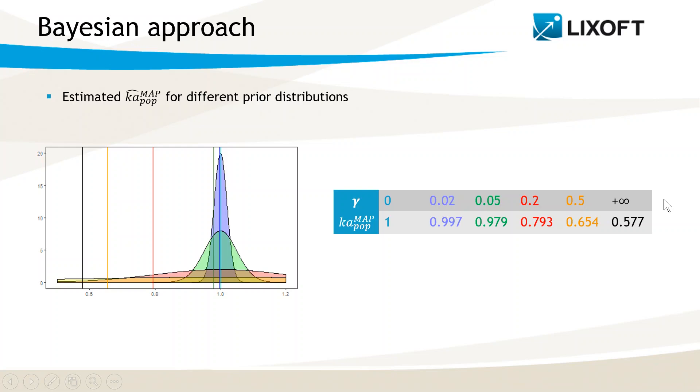A value too small for γ will constrain strongly the estimate, but a value too high will be meaningless, because the weight of the prior in the estimation will be negligible. So the standard deviation of the prior distribution should be chosen based on the confidence that you have on the data, or the confidence that you have on the prior.